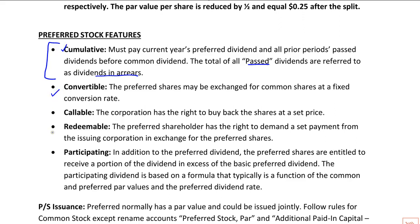Convertible means that you can hand in the preferred stock and get a set number of common shares. Callable means that the corporation can buy the preferred stock back, typically at a set price. Redeemable means that the investor — the holder of the preferred shares — can force the company to buy back the shares at a set price. Redeemable preferred is classified as a liability, so it's a bit unusual: it will say preferred stock, but if it's redeemable preferred, it will be classified as a liability.